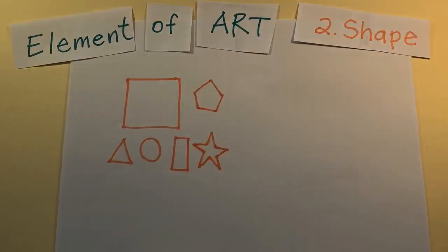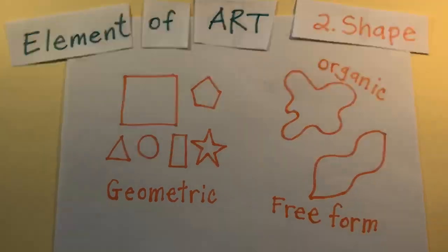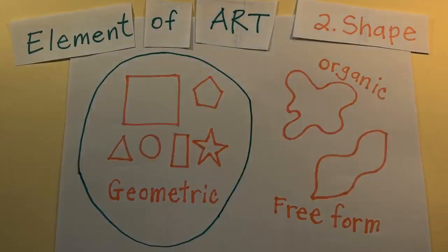The two main categories of shape are geometric and organic, free-form shapes.